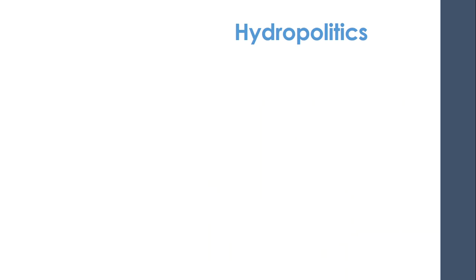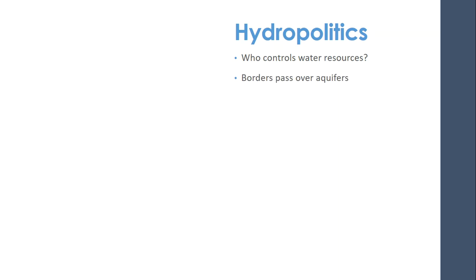I'm also going to talk about hydropolitics, which is basically the politics surrounding water. Water does not recognize international barriers. Groundwater certainly doesn't recognize them. Rivers don't recognize them, although they're often used as barriers. So the question is: who controls water? It's not a very discreet thing. You can own your piece of property, but your groundwater is connected to your neighbor's groundwater. Borders pass over these very large aquifers.